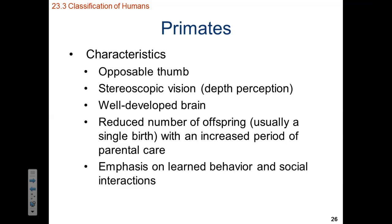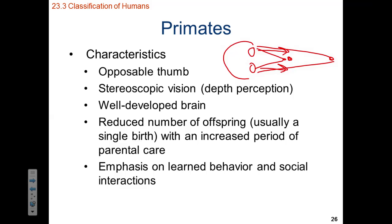That opposable thumb allows for much more grasping and gripping than would otherwise be possible. We also have stereoscopic vision, meaning we have two eyeballs pointing the same direction. Since those two eyeballs are slightly offset from each other, they are able to determine how far away an object is. We also typically, as primates, will have well-developed brains with an overdeveloped cerebrum. We are also going to have a reduced number of offspring — investing a lot of biological resources into a few offspring rather than producing hundreds or thousands with minimal investment per individual.